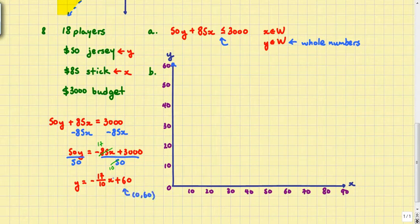And then I have a slope of negative 17 over 10, which is a little harder to graph. We're going to move down 17 and move over 10. So the next point should be somewhere there. We're going to draw a line through these two points.